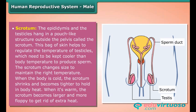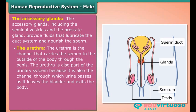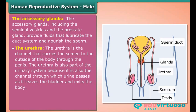When it is warm, the scrotum becomes larger and more floppy to get rid of extra heat. The accessory glands, including the seminal vesicles and the prostate gland, provide fluids that lubricate the duct system and nourish the sperm. The urethra is the channel that carries the semen to the outside of the body through the penis.